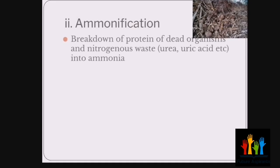The next step after nitrogen fixation and nitrification is ammonification. What happens in ammonification? When bacteria have made nitrates and plants have used them to build structures, and different animals have eaten plants and transferred proteins — when plants and animals produce waste material, in the case of plants it is fallen leaves, and in the case of animals it is urea and urine, and in all of these waste materials nitrogen is present.